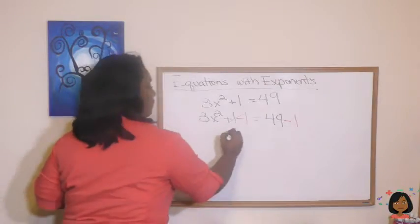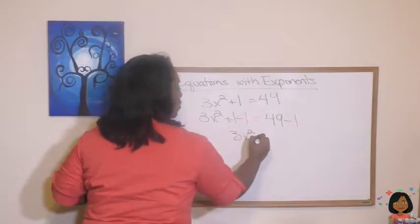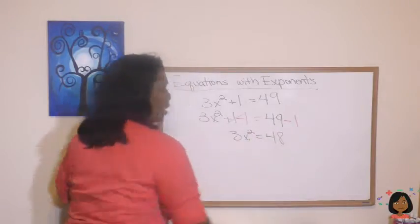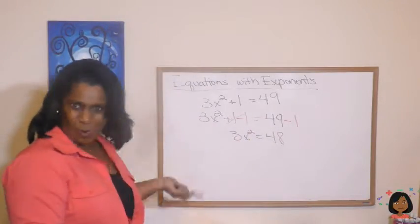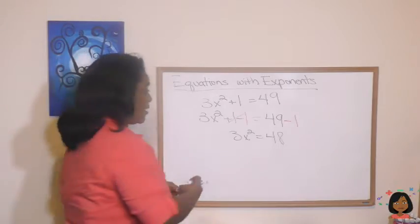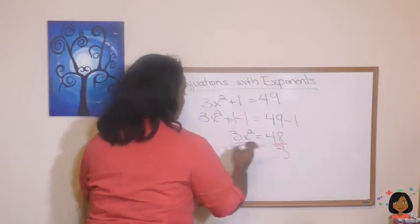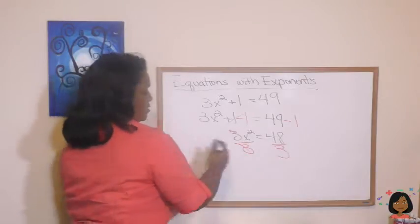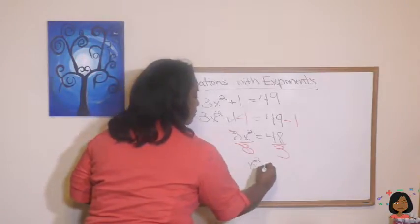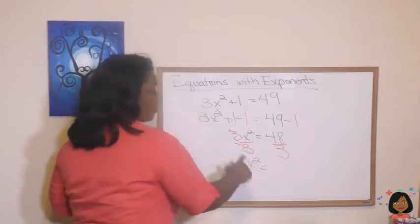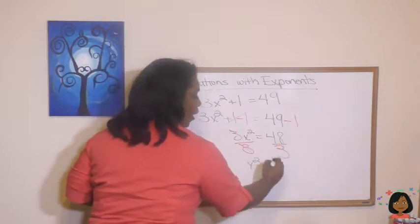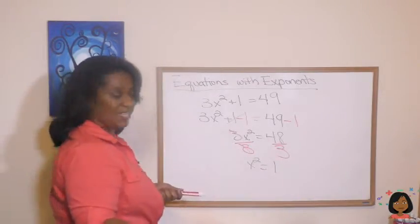When that cancels out, we've got a 3x squared equals a 48. Okay, what do we do here? Looks like what we just did. We got to get rid of our 3, so let's divide both sides by 3 and simplify. We're left with an x squared, and we are left with 3 goes into 4 one time, we have an 18 to deal with.